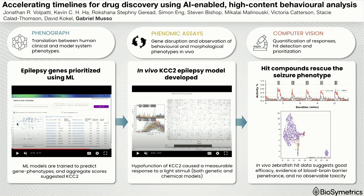We're looking at specificity of those phenotypes, and through this process we identify genes in the upper right — genes that have both a high level of human association with the disease, in this case epilepsy, and a strong prediction of manifesting a phenotype. We're effectively looking for causality on the basis of predicting a phenotype in our model system.